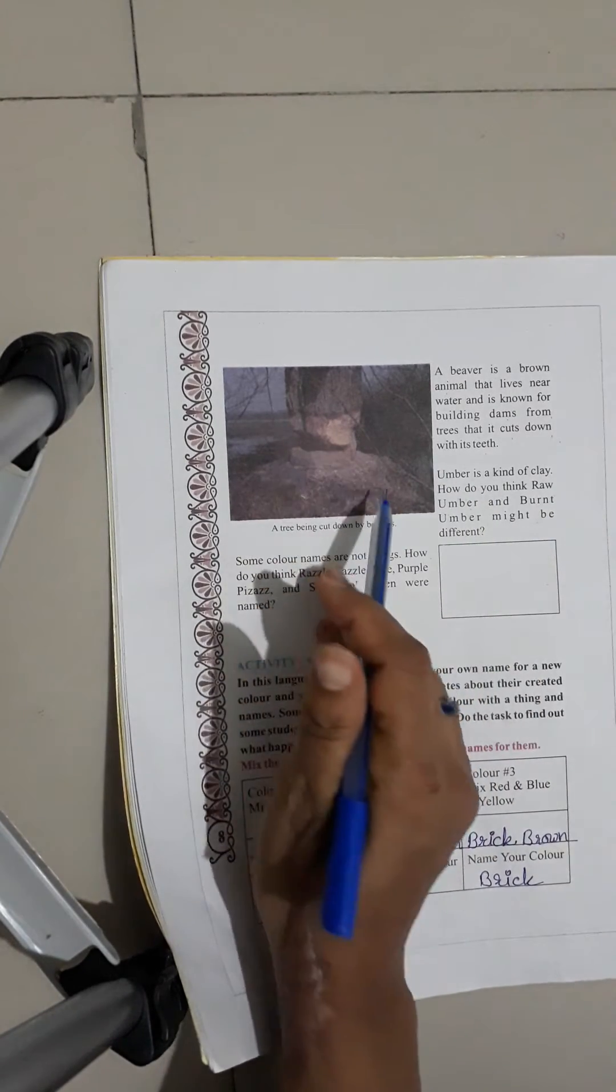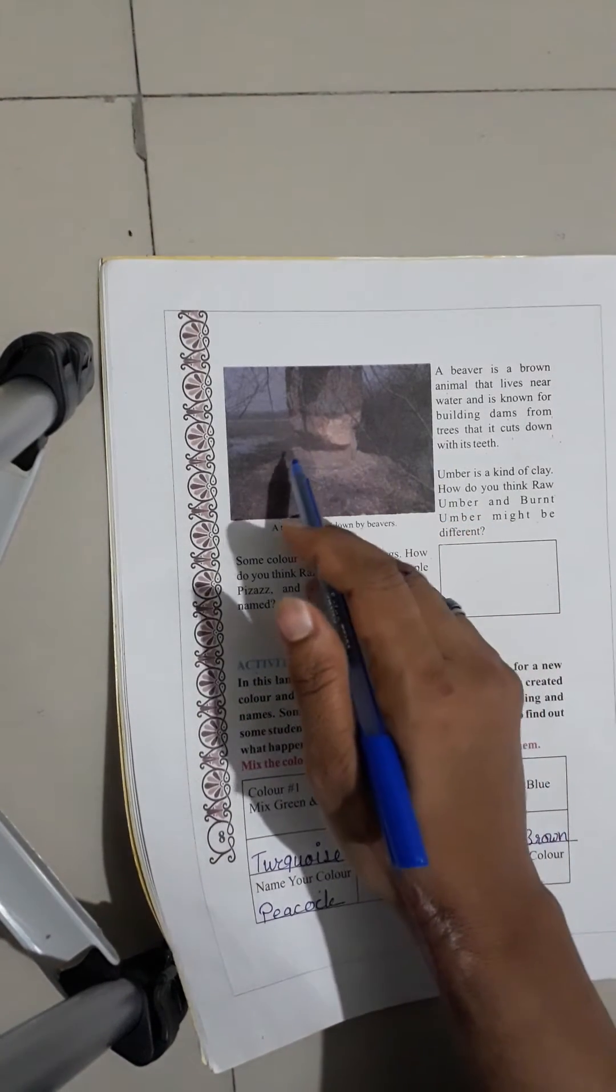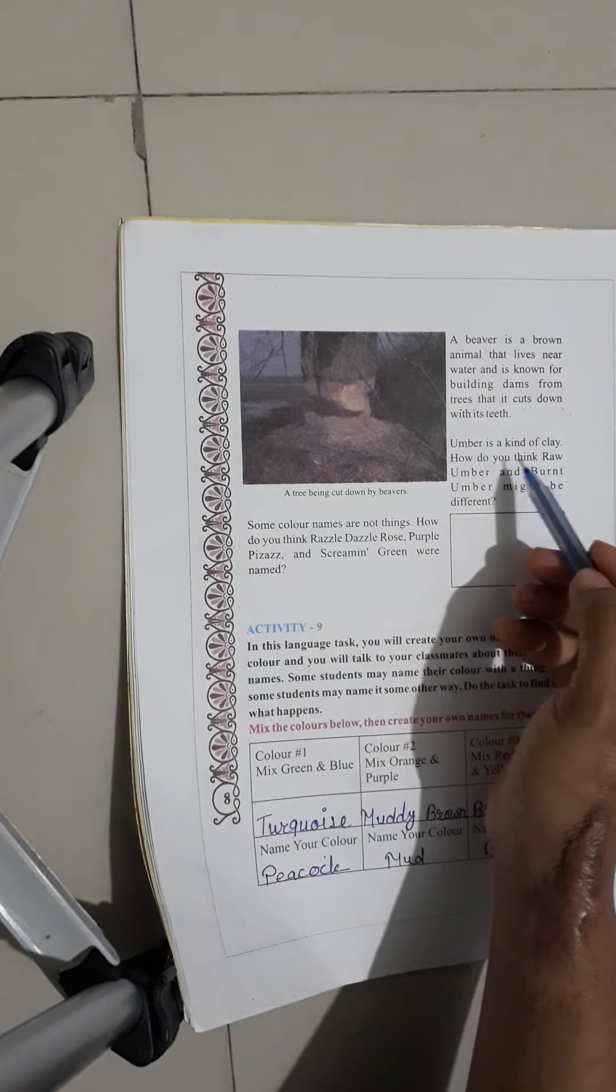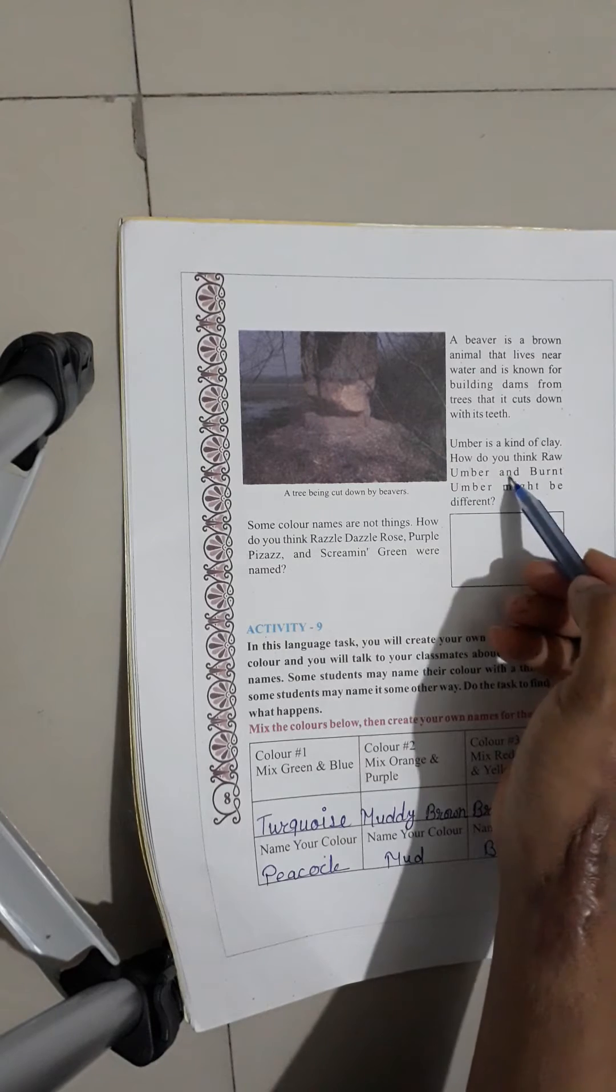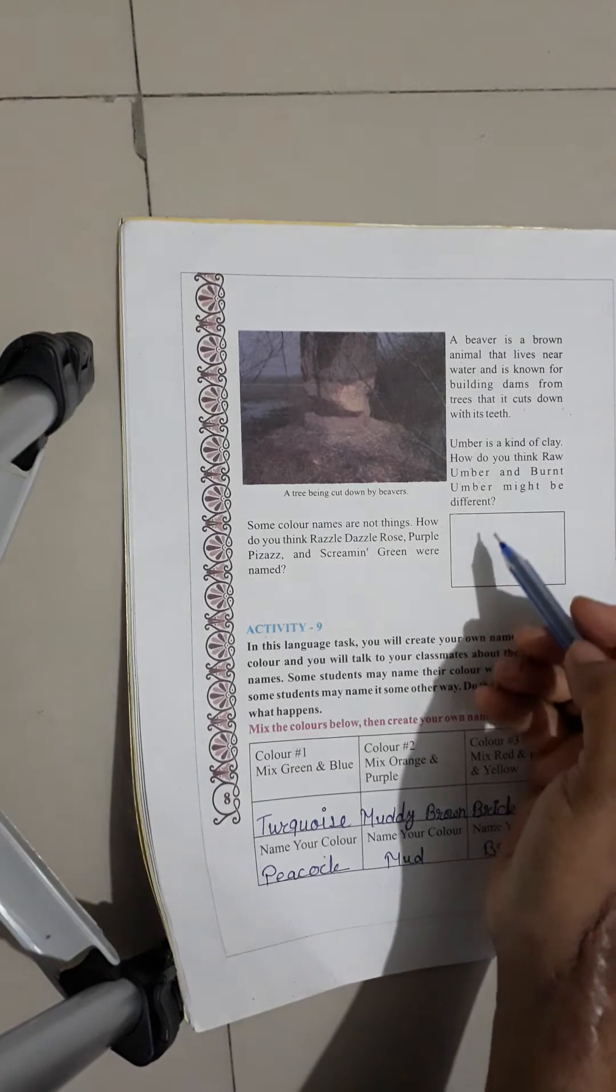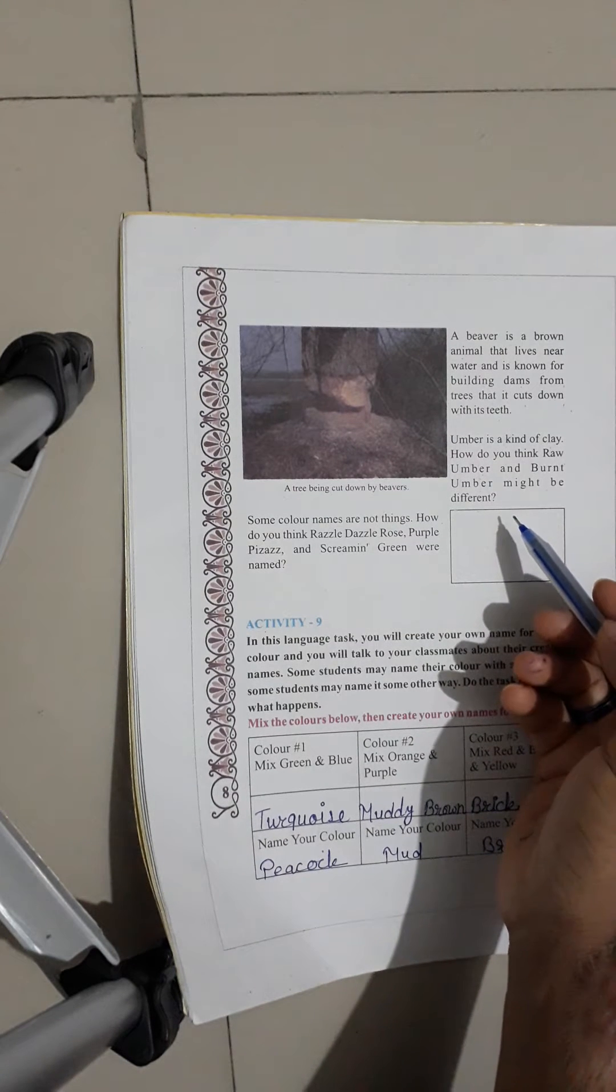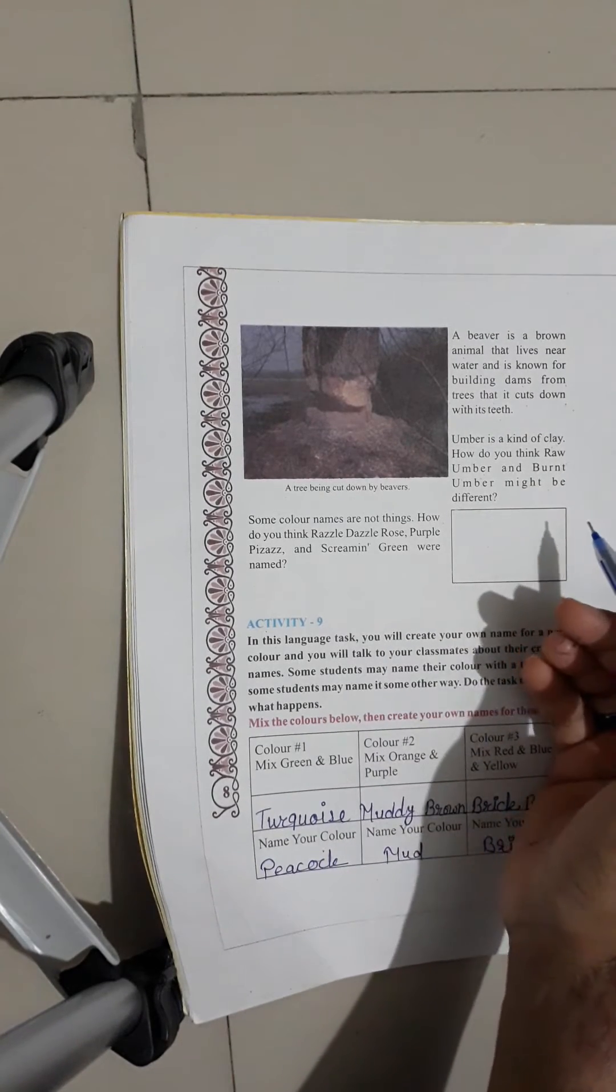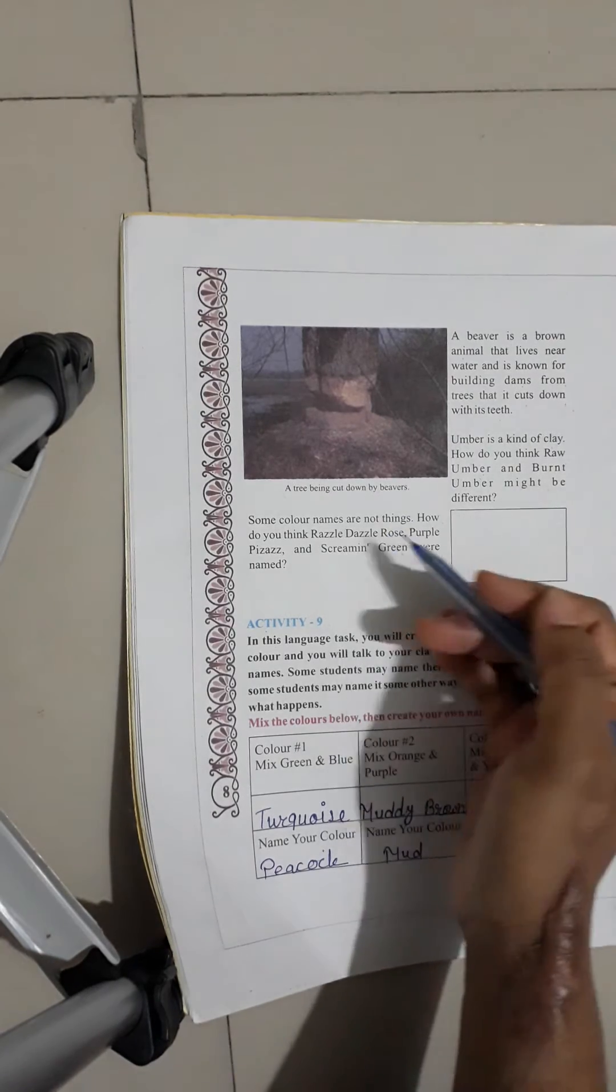Umber is a kind of clay. How do you think raw umber and burnt umber might be different? If you think that umber is a clay, then you can think that raw umber and burnt umber are different. You can see the difference between the raw umber and burnt umber.